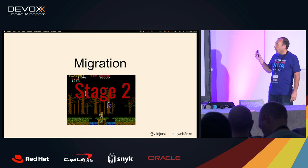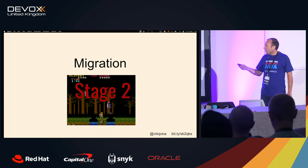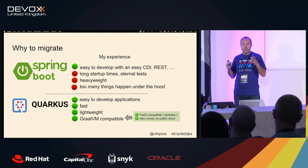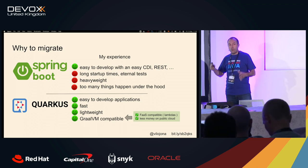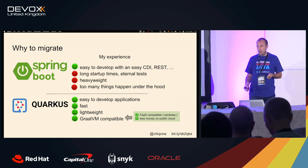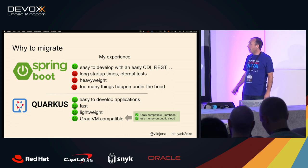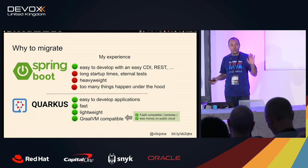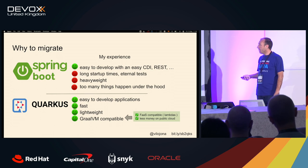Let's talk about the migration. Why I decided to migrate? My experience with Spring Boot is that it's easy to develop because it abstracts all the complexity — though sometimes abstracting complexity creates more complexity. But it takes a lot to start an application. Tests take a lot of time — the context is started every time on most tests. It's super heavyweight and consumes a lot of memory. And one thing I don't like is that there are too many things happening under the hood — libraries starting that you didn't expect. So I didn't like that and I heard about Quarkus.